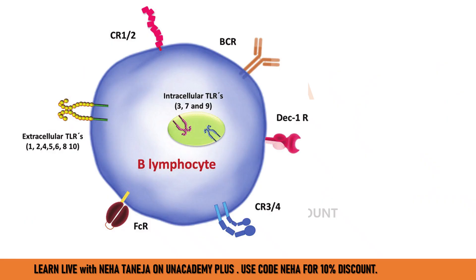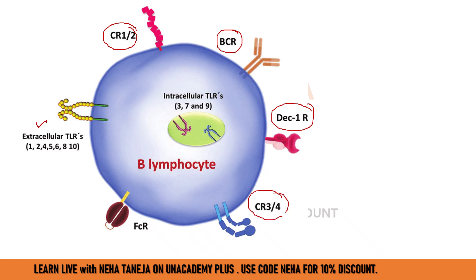This is also a master slide showing a very detailed diagram of the B lymphocyte, in which its receptors are mentioned — B-cell receptor is mentioned, and toll-like receptors are also visible. Each one has its own functionality. When I bring the video on receptors, when I compare B-cell and T-cell receptors, we will discuss each thing in detail.